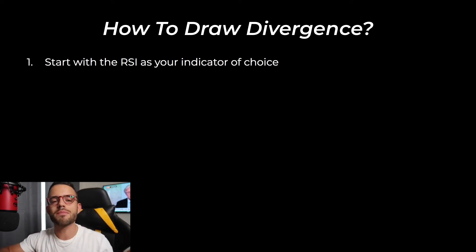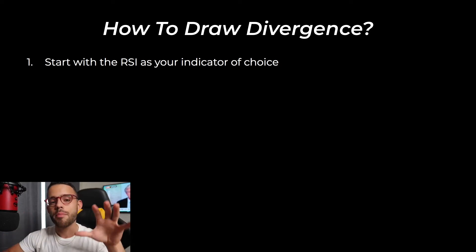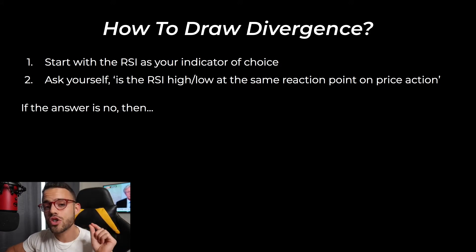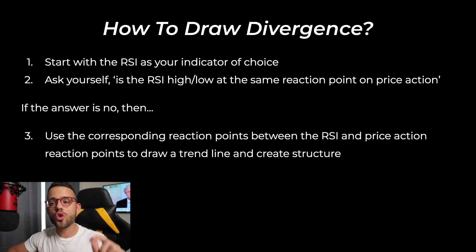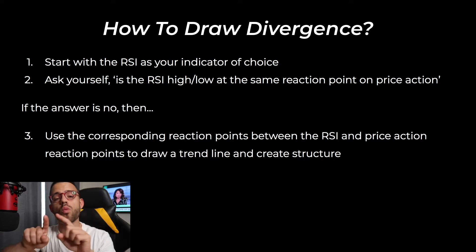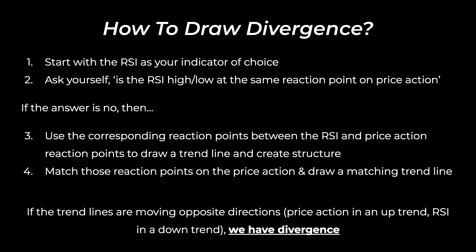Some people use MACD, some people use everything — it doesn't matter. Start with the RSI. Then you're going to ask yourself: is the RSI high or low at the same reaction point as price action? If the answer is no, you're going to use the corresponding reaction points between the RSI and price action to draw trend lines — one trend line on the RSI and one trend line on price action. Once you have those trend lines drawn, you'll be able to clearly identify if there's divergence or not.